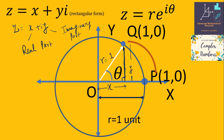Applying the right-angle triangle property, r is the hypotenuse, equal to the square root of base-squared plus perpendicular-squared, where base is x and perpendicular is y, giving r = 1. The projection of r onto the x-axis equals r times cosine of theta, and since r = 1, it is simply cosine theta. The projection along the y-axis equals sine theta.